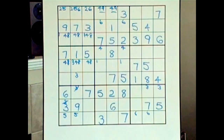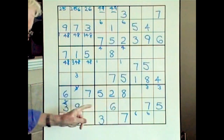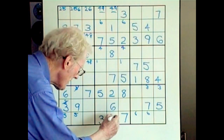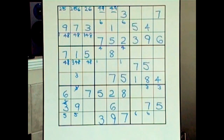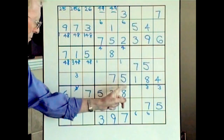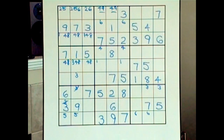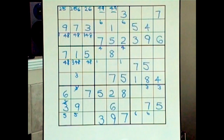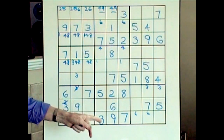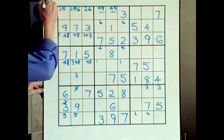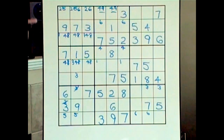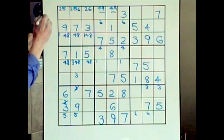Nines — we've only got one nine along the bottom here. This block is fascinating because this nine cannot go there or there — it's in the same row — therefore the nine has to go down there. If the nine goes down there, that leaves us with a block with only two options. I'll put a little note up here to mark where I left off — just so I know I'm still doing nines.